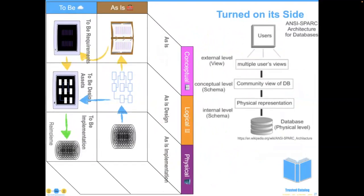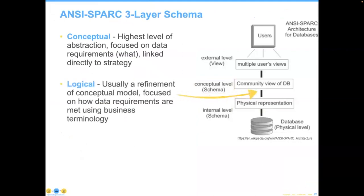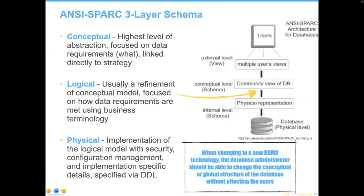This model maps to the ANSI/SPARK stuff — both deal with a conceptual level and a physical level. The part they differ on is a logical level in between, which the data modeling community has found quite useful. The conceptual model is focused on abstract requirements. The logical is considered a refinement, but not necessarily an abstraction. The physical implementation addresses how it works in Oracle, AWS Cloud, or whatever else you're doing. You should be able to change that backend in a way that doesn't impact the users.